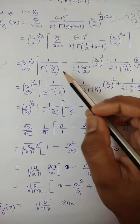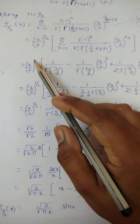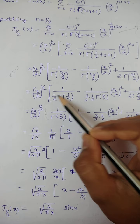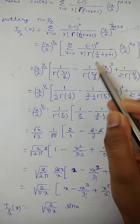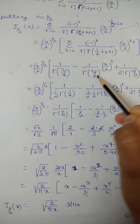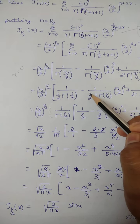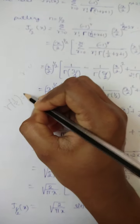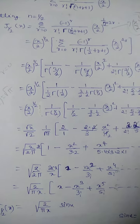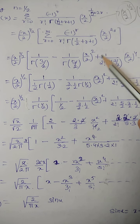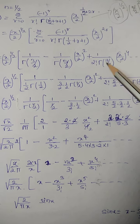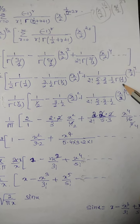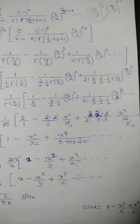Now we use results from the previous semester: Γ(3/2) = (1/2)·Γ(1/2), and Γ(5/2) = (3/2)·(1/2)·Γ(1/2), and Γ(7/2) = (5/2)·(3/2)·(1/2)·Γ(1/2). We know that Γ(1/2) = √π. So (x/2)^2 remains as is, and for the 2! term with Γ(7/2), it expands similarly.